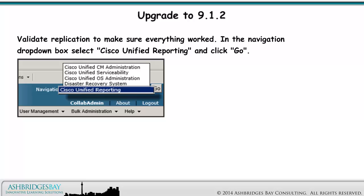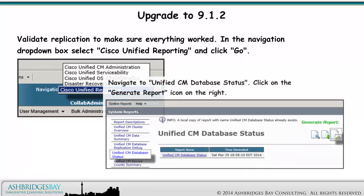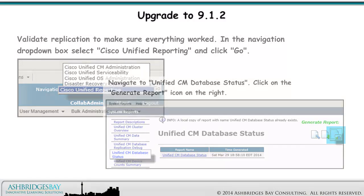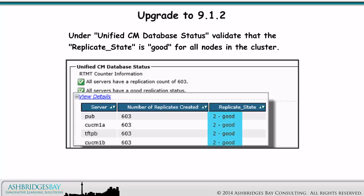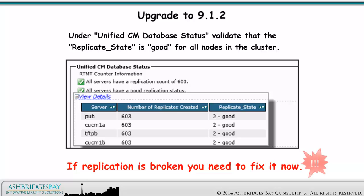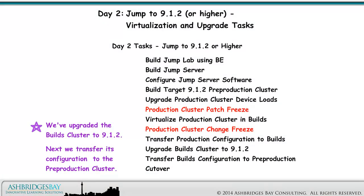Validate replication to make sure everything worked. In the Navigation drop-down box, select Cisco Unified Reporting and click Go. Navigate to Unified CM Database Status and click on the Generate Report icon on the right. Under Unified CM Database Status, validate that the Replicate State is good for all nodes in the cluster. If replication is broken, you need to fix it now. We've upgraded the Builds cluster to 9.1.2. Next, we transfer its configuration to the Pre-Production cluster.